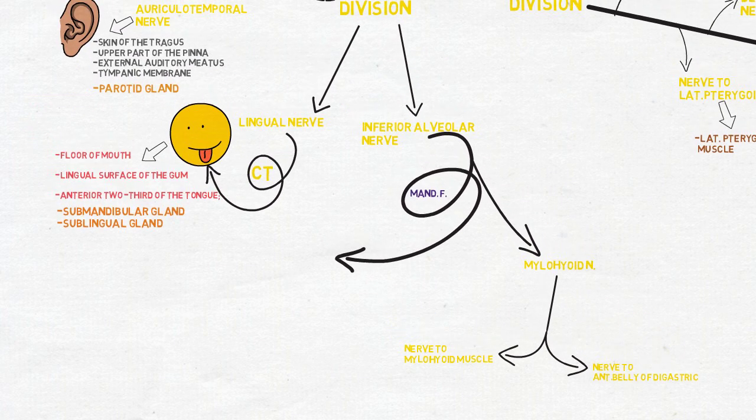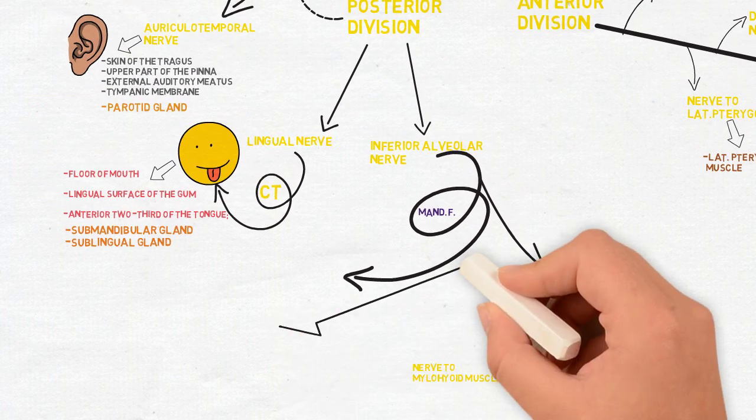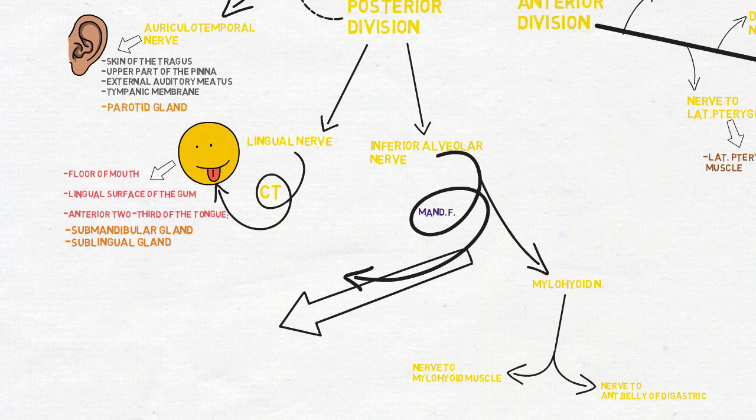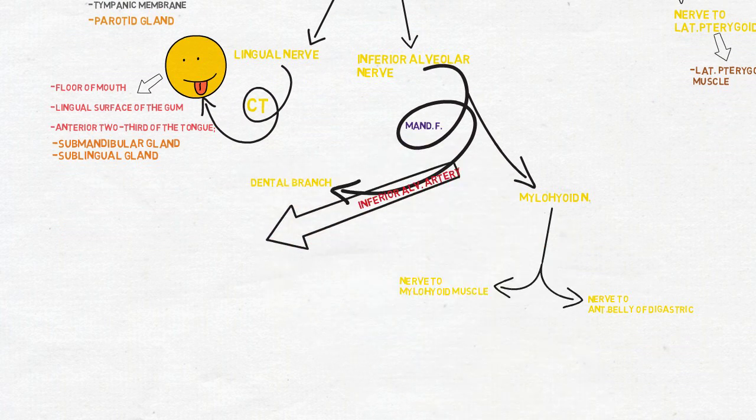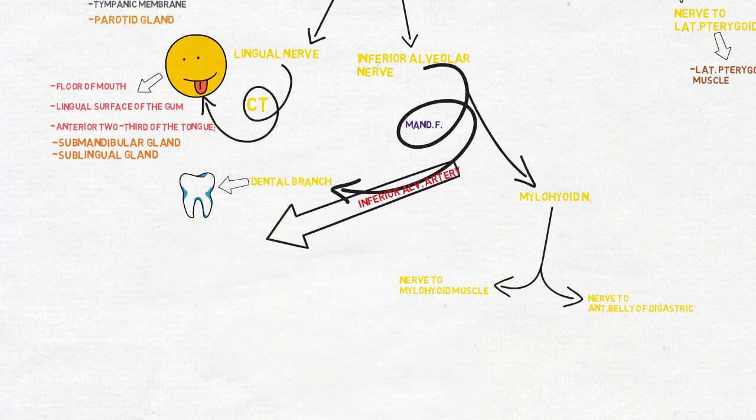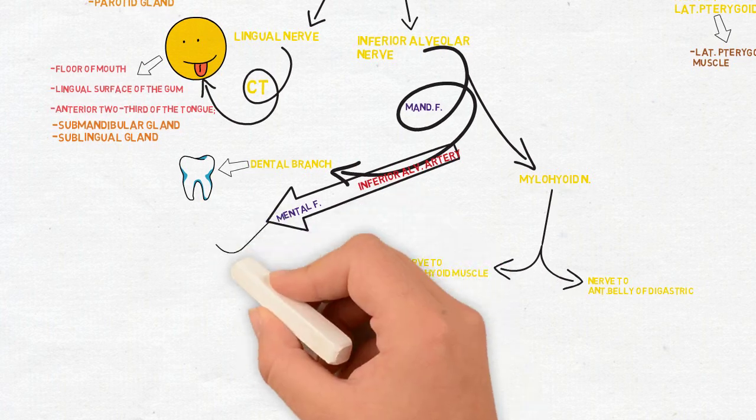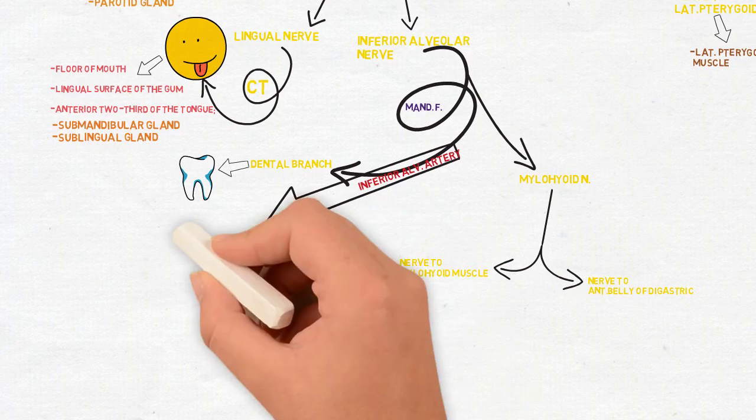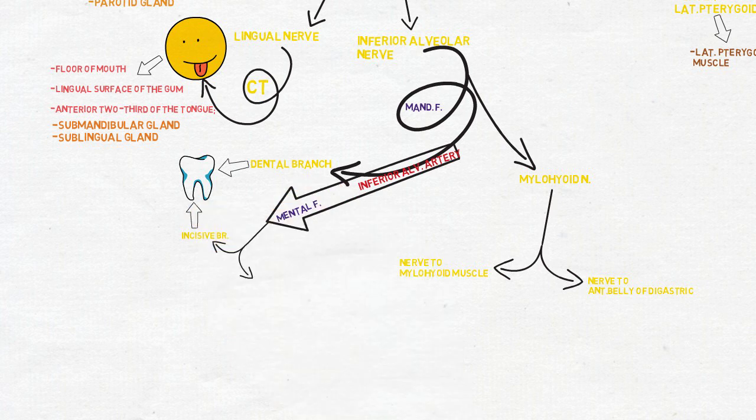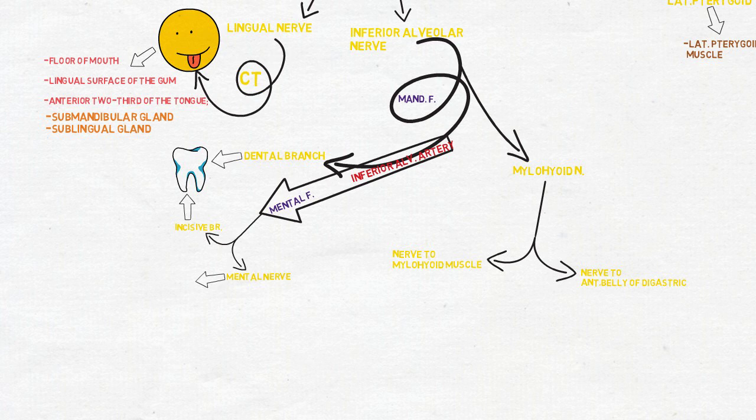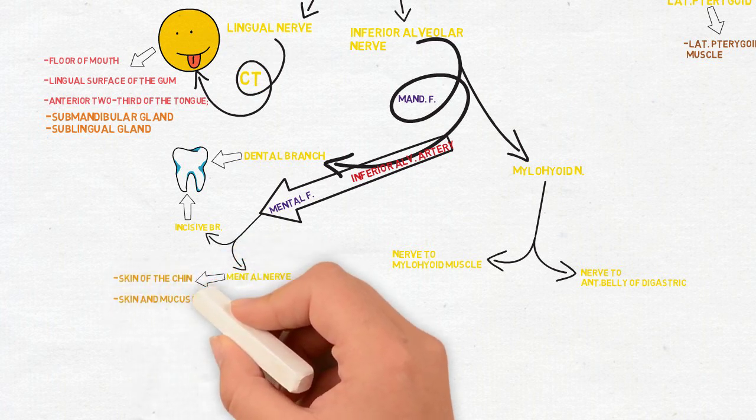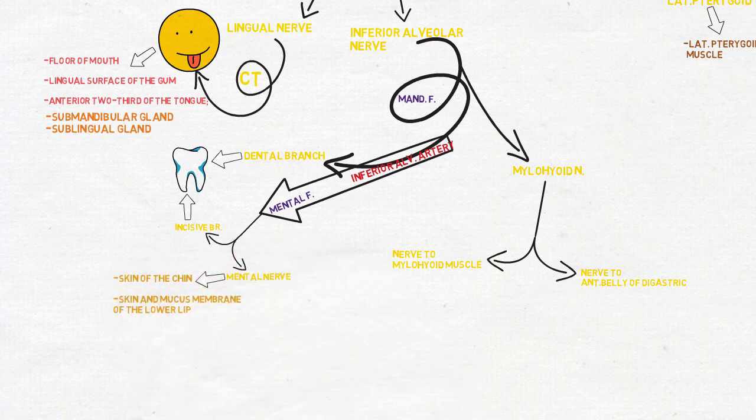The inferior alveolar nerve then enters into the mandibular canal through the mandibular foramen along with inferior alveolar artery and gives the dental branch that supplies the lower molars and premolars. The nerve then exits through the mental foramen to give incisive branch that supplies the incisors and canines, then the mental branch that supplies the skin of chin and the skin and mucous membrane of lower lip.